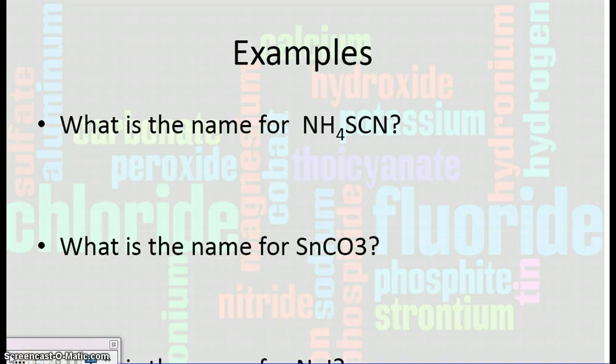Last set of examples. What is the name for NH4SCN? This looks kind of crazy at first if you look at it. We have to identify what you have. NH4 is a positive polyatomic called ammonium. And then SCN is another polyatomic, thiocyanate.